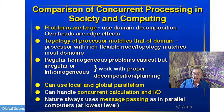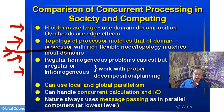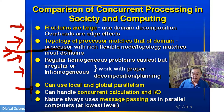Comparing society and computers: problems have to be big; topology of the people or processors must match the domain; a processor or hypercube cluster with rich flexible topology handles more problems efficiently. We can do regular homogeneous problems with equal work per processor, or irregular and inhomogeneous problems with proper decomposition and planning. We can use local and global parallelism — hands and lots of people. We can do concurrent I/O. And we always use message passing. We learned all of this just from society — these are the fundamental principles of parallel computing.